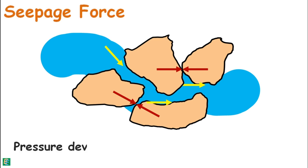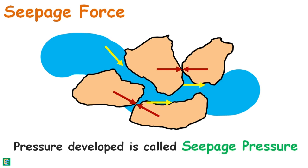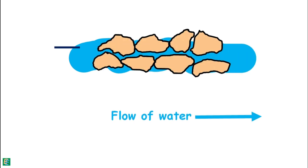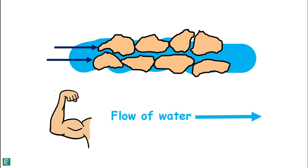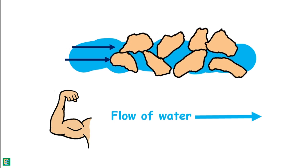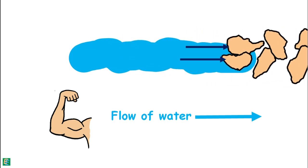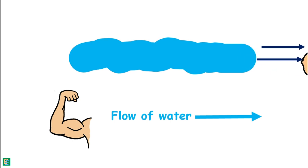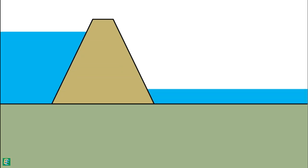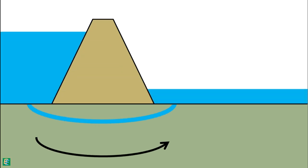Because of the seepage force, the pressure developed in the soil is termed seepage pressure. When water flows horizontally through the soil, it exerts seepage force on the soil particles in the horizontal direction. If this force is strong enough, it has the capability to displace soil particles and carry them away with the flowing water. This phenomenon leads to a very serious problem in soil engineering — the development of channels in the soil — and this phenomenon is called piping.